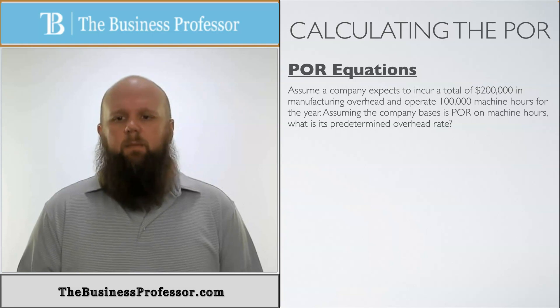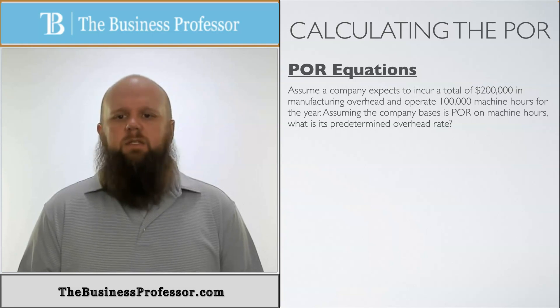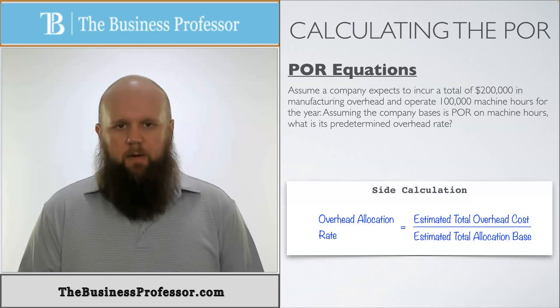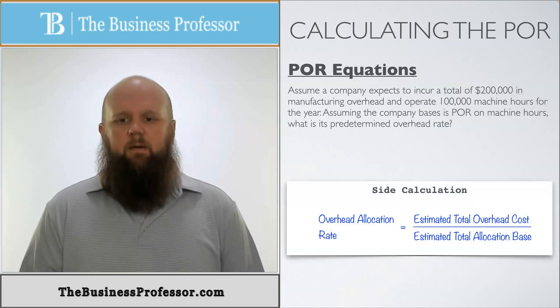Assuming the company bases its POR on machine hours, what is the predetermined overhead rate? So here's our equation. Estimated total overhead divided by estimated total base.